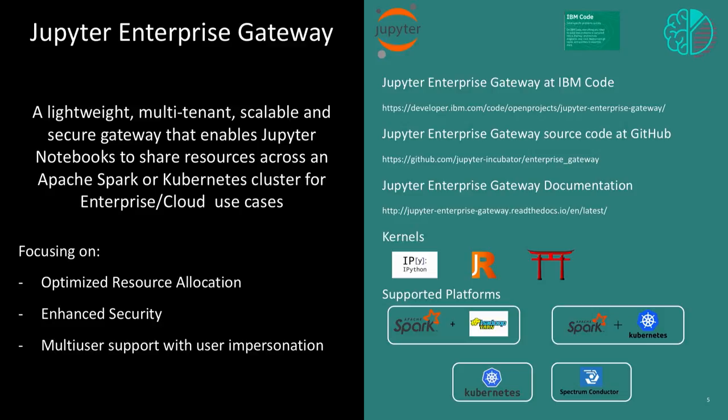We enabled socket communications — particularly now that it's remote — to be encrypted, along with all other communications as well. We also brought the notion of multi-user support with user impersonation, leveraging Kerberos in some environments or other techniques. On the right side of the slide you can see resource links to learn more about Enterprise Gateway and supported platforms including Spark, Kubernetes, and others.